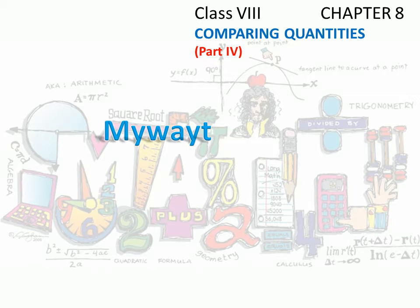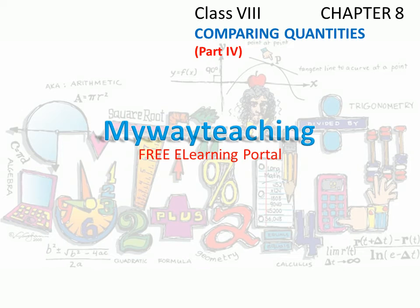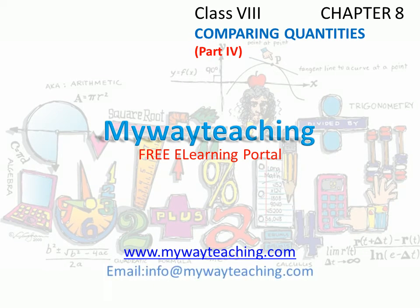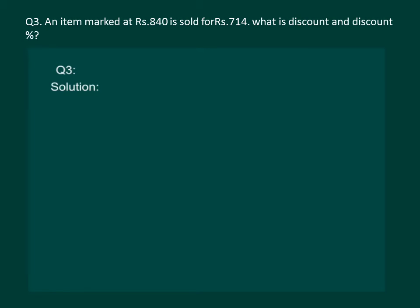Hello friends, this video is brought to you by mywaytea ching.com. Let's try to understand discount with the help of some examples. Please read the question on the slide — it says that an item marked at rupees 840 is sold for rupees 714. What is the discount and discount percent?